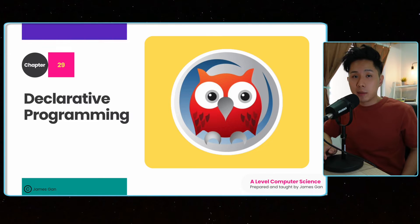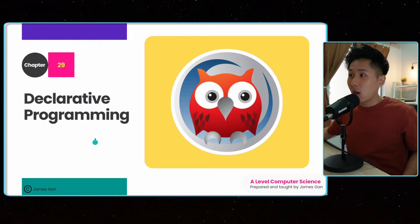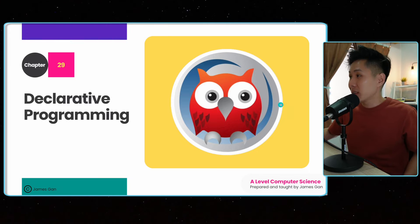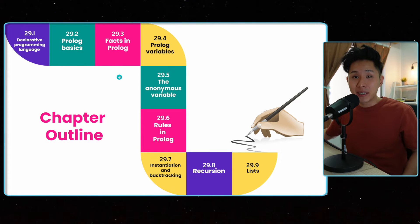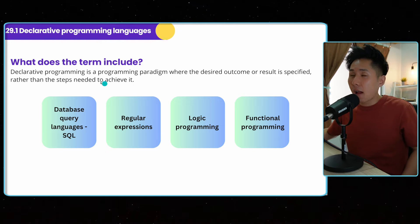Hello everyone, welcome back to this channel. My name is James. Welcome to the last chapter of A-level computer science called declarative programming. We're going to look into Prolog, and that's the icon of Prolog. These are the topics that we will be learning. Without further ado, let's dive into what declarative programming language means.